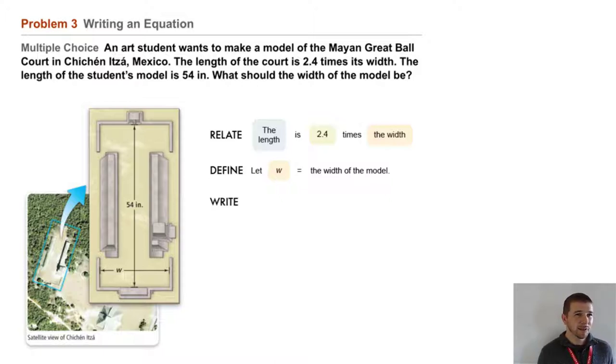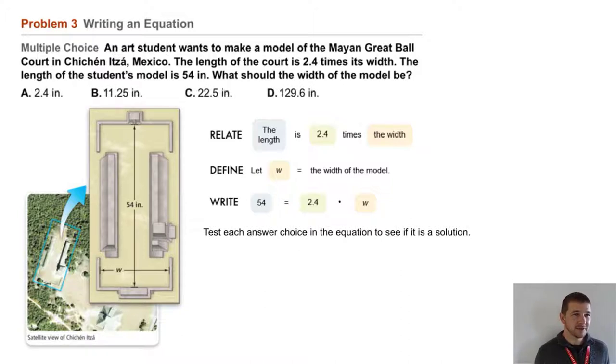And then we write our equation: 54, representing the length, equals, representing the word 'is', 2.4 times W, the width. Then we can test each answer choice in the equation we've created to see if it's a solution.